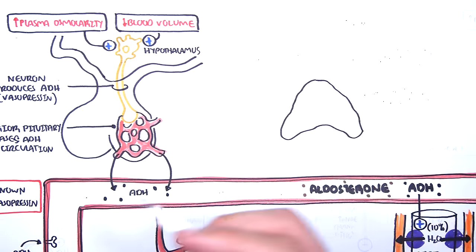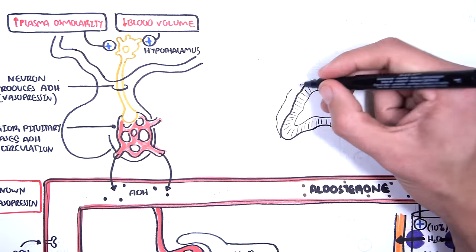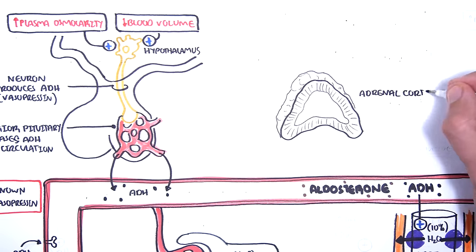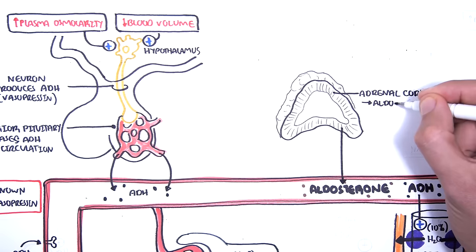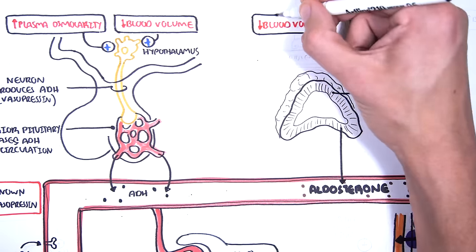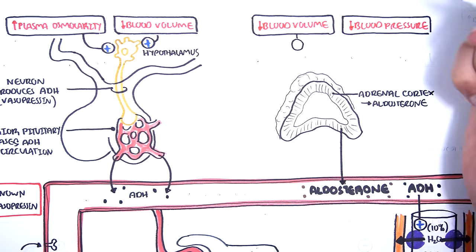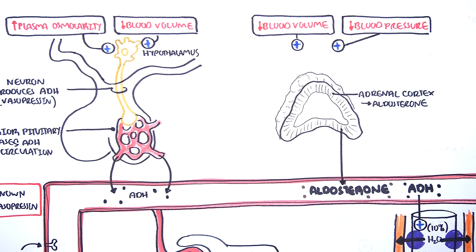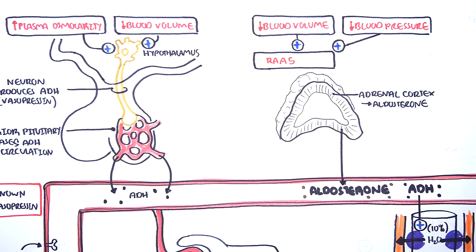The next hormone which is important in maintaining blood volume and fluid homeostasis is aldosterone, a mineralocorticoid which is released by the adrenal cortex of the adrenal gland. How does aldosterone get released, and what does it do? When you have low blood volume or low blood pressure, it will stimulate the renin-angiotensin-aldosterone system, or RAS for short. RAS will lead to the stimulation of aldosterone from the adrenal cortex.